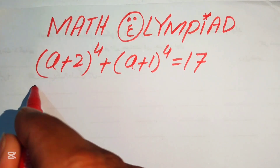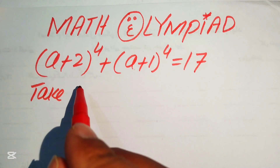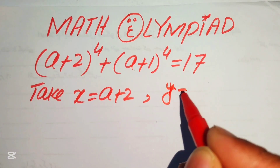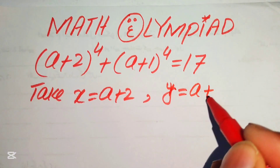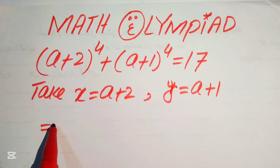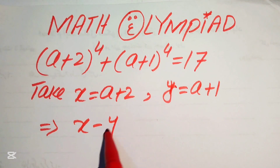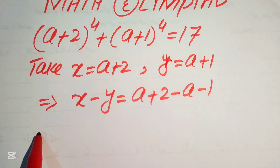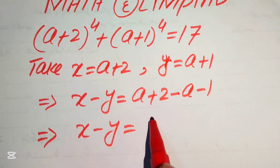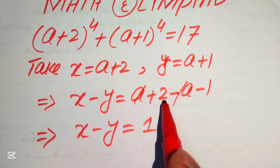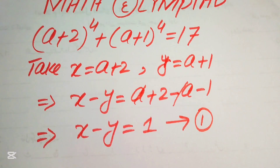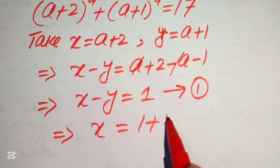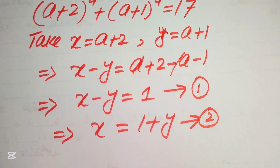The very first step is to let x = a+2 and y = a+1. If we subtract x and y, we get x − y = (a+2) − (a+1), which simplifies to x − y = 1, since the a's cancel and 2−1 = 1. We call this equation number 1. Moving y to the right gives x = 1 + y, which we call equation number 2.